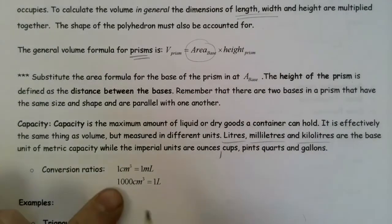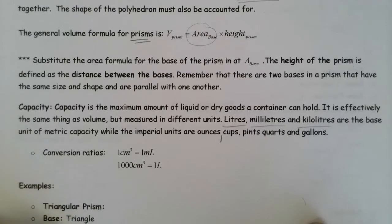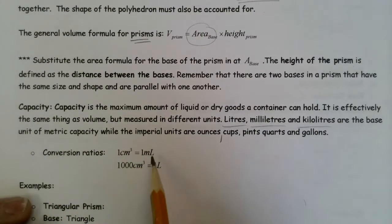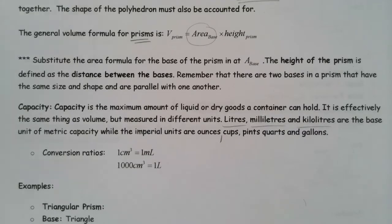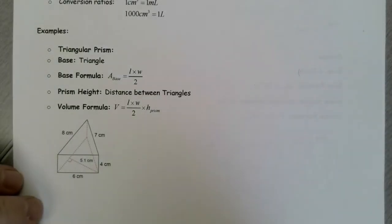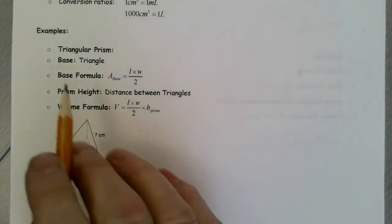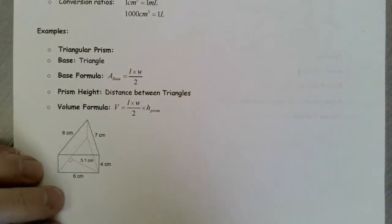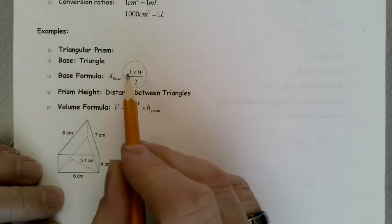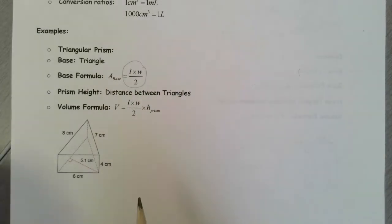Here's a conversion: one centimeter cubed of volume equals one milliliter of capacity, and a thousand centimeters cubed equals one liter. Now let's look at some examples where we're calculating volume. In this first question, we're looking at a triangular prism. The base is a triangle, so both the top and bottom are triangles, and the formula for the area of the base will be length times width divided by two. The height will be the distance between the triangles.